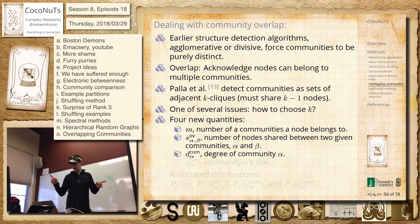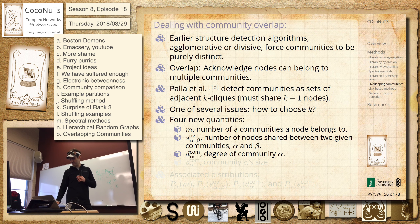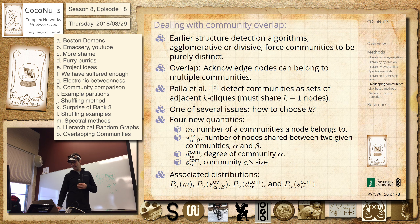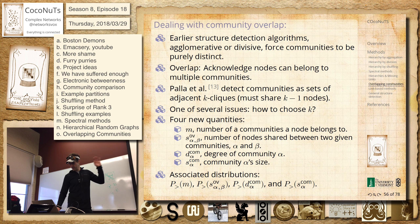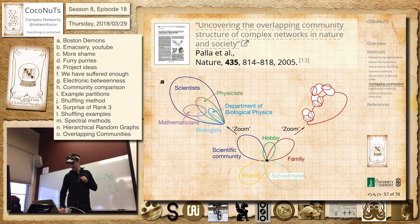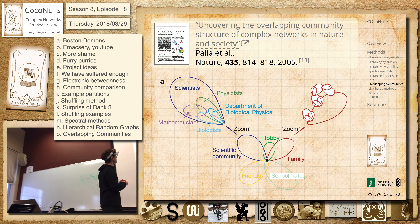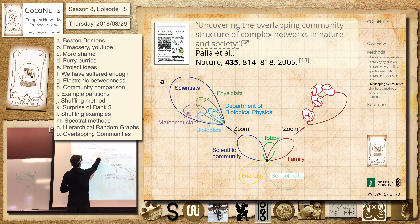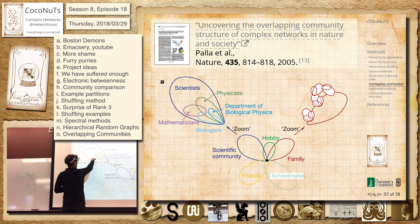Now you can have communities that are connected to each other, so you're going to have a degree for them — written as a D, so it's a degree. And then community size. And you have distributions — complementary cumulative distributions using the notation from their paper. So now you can have a mathematician, for example, who might be sort of really a physicist and a mathematician. They're all scientists.